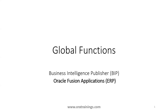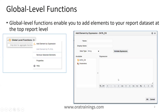Hello, welcome to orotrainies.com. In this session we'll discuss global functions and BIP reports in Oracle Fusion. When we create any data model, generally we have a grouping called global level functions, which are also available in any dataset we create, or by default within the dataset. We'll try to understand what global level functions are and why we use them.